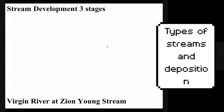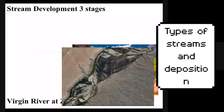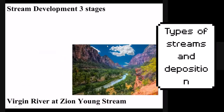Now let's take a look at what each type looks like. A young stream might be like this Virgin River at Zion National Park. You can see the river is in the middle of a valley. It doesn't really have much of a floodplain — even though this one doesn't have white water rapids, it is still considered young.